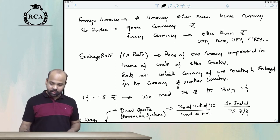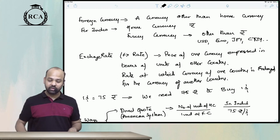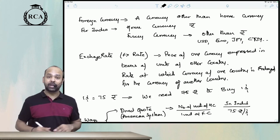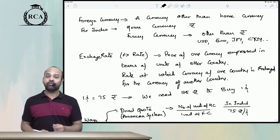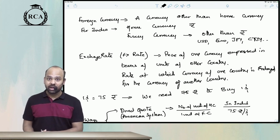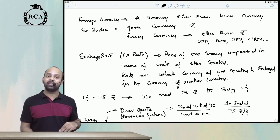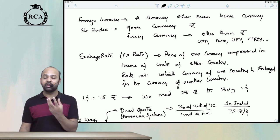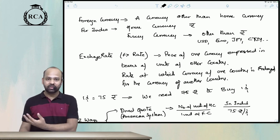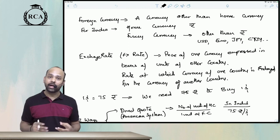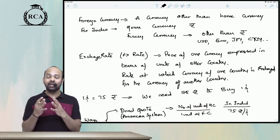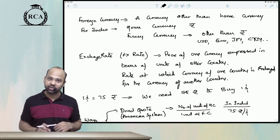This is Unit 4 of Chapter 4 on exchange rates and its effects. Foreign currency is any currency other than your domestic currency. An exchange rate is basically the price of one currency in relation to another currency — how many units of one currency are required to fetch one unit of another currency. That is called an exchange rate.